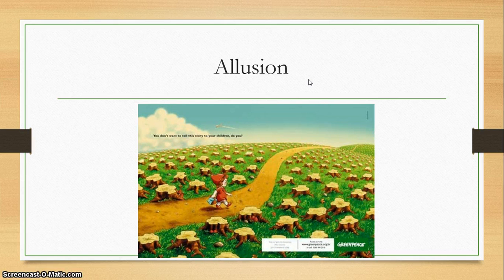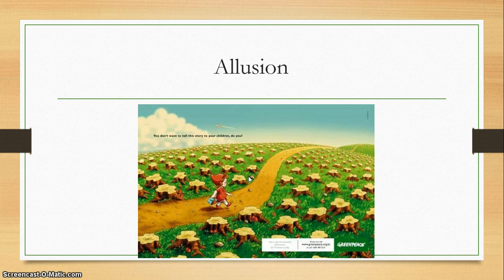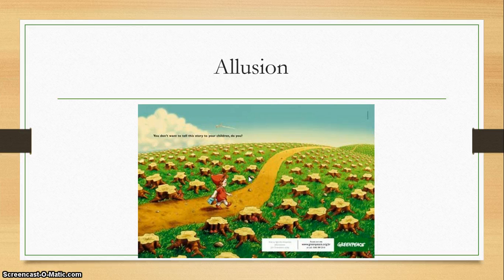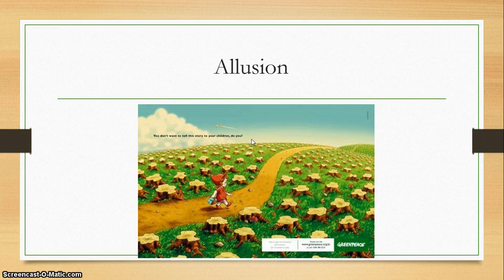Basically, what an allusion is: it refers to that other story. In the image, you see Little Red Riding Hood. Nowhere does that picture say Little Red Riding Hood — we just know exactly who she is. They're relying on us to know Little Red Riding Hood's story and be able to jump off from that point. So they've saved themselves a lot of time; they don't have to explain about a little girl going through the forest. They can jump off at the point where the forest has been totally cut down and go straight to the language: 'You don't want to tell this story to your children, do you?' An allusion is a really helpful strategy for writers in that they can save a lot of time and tap into a reader's culture. The problem is, if the audience doesn't know the story, they're going to be missing out. So it is a risky strategy, but definitely an interesting one to analyze in your paper.